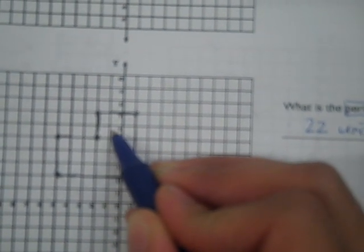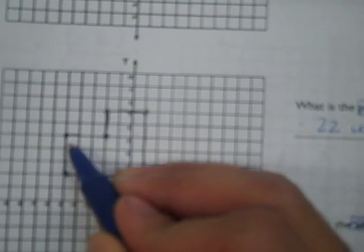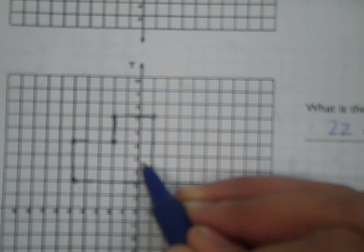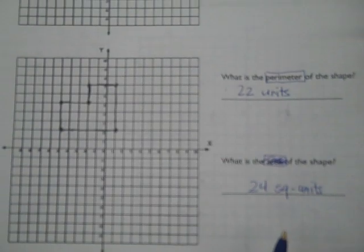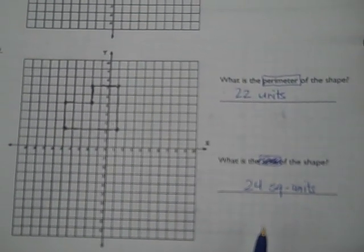1, 2, 3, 4, 5, 6, 7, 8, 9, 10, 11, 12, 13, 14, 15, 16, 17, 18, 19, 20, 21, 22, 23, 24. There are 24 square units. And that is how you find perimeter and area of a shape on a coordinate plane.